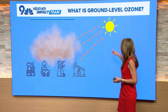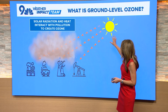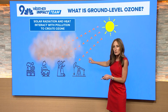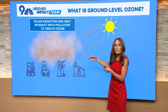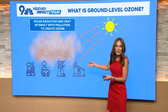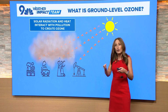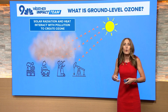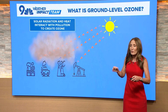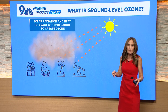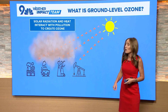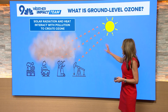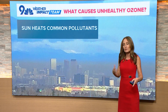Solar radiation and heat interact with pollution to create ozone. And when we say pollution, we're talking about common pollution like car exhaust, pollution from refineries or industry, or even VOCs — common pollutants you find within your home. So it's an interaction between the sun and those common pollutants.